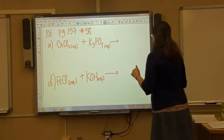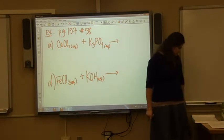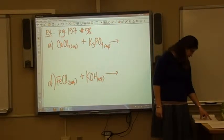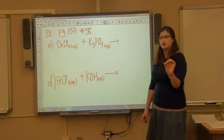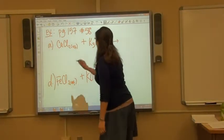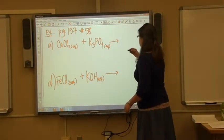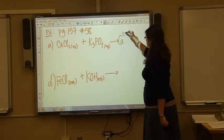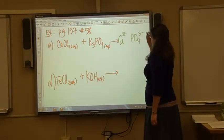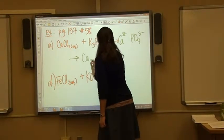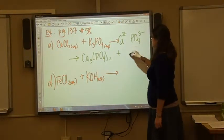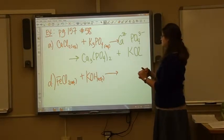Let's do an example from your homework: page 157, number 58 — predict whether a precipitate will form when aqueous solutions of the following compounds are mixed, and if so write its formula and a net ionic equation. Doing outside and inside, we get calcium phosphate — Ca3(PO4)2 — and then KCl for your inside group. Now balance this equation.